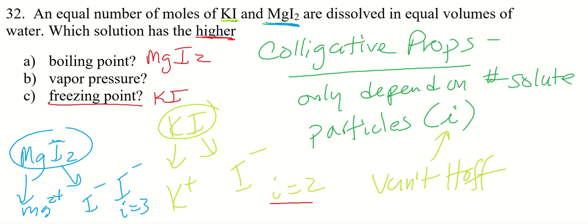Vapor pressure lowering is also a colligative property. If it asks you for the lower vapor pressure, it would be magnesium iodide, but adding solute never raises the vapor pressure. It will always lower it. What will lower it less? That's the way I should have explained it earlier.